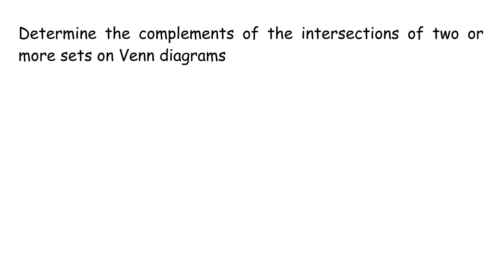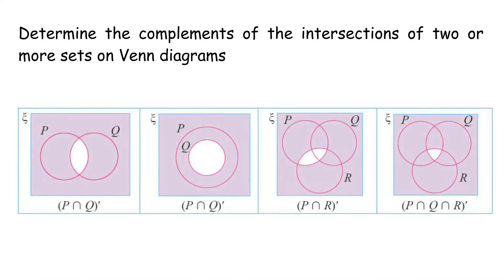Determine the complements of the intersections of two or more sets on Venn diagrams. The complement of the intersections of two or more sets are represented by the shaded regions.